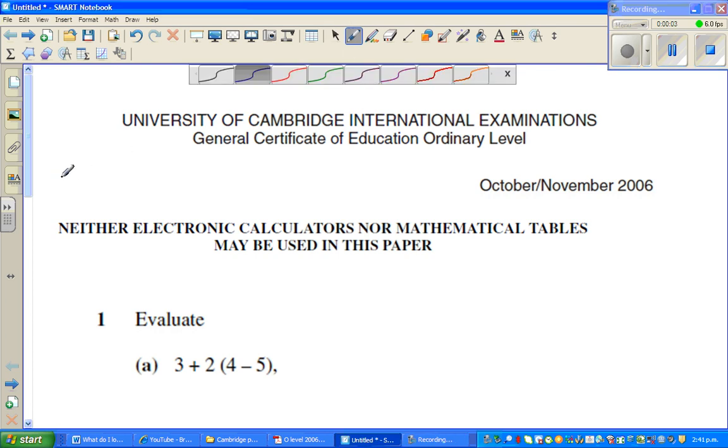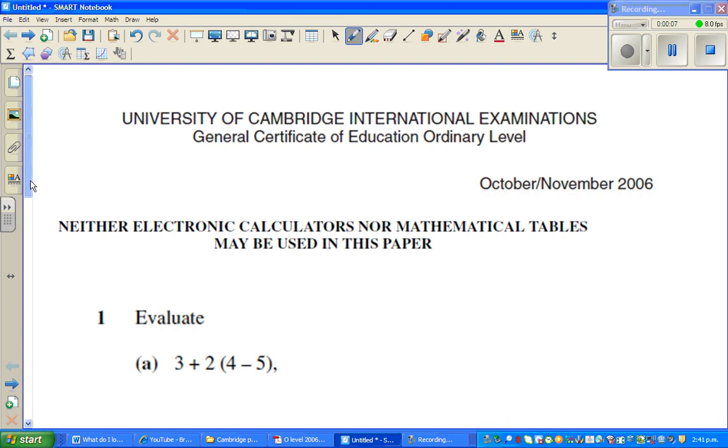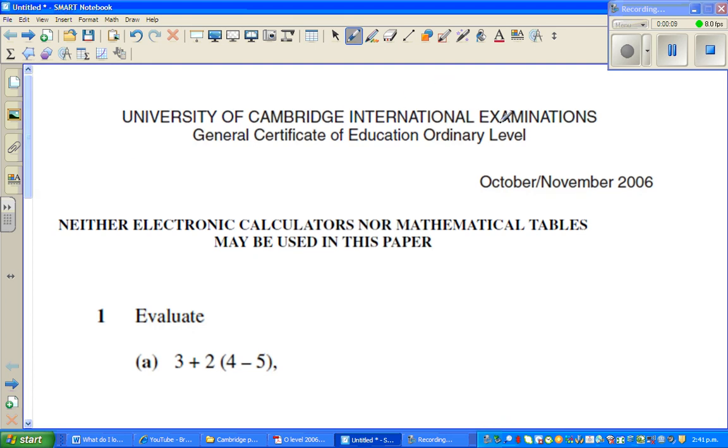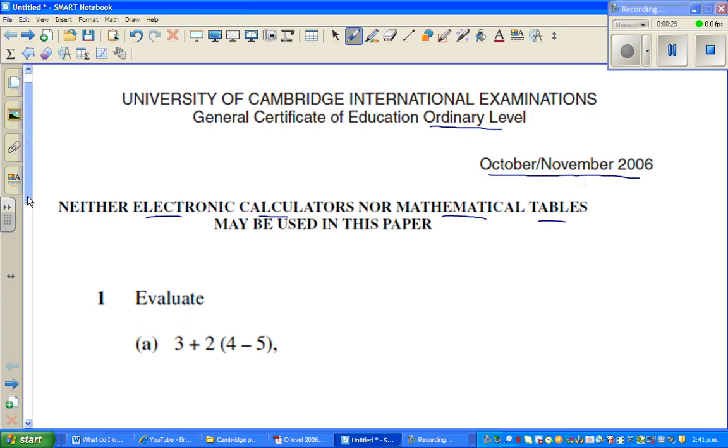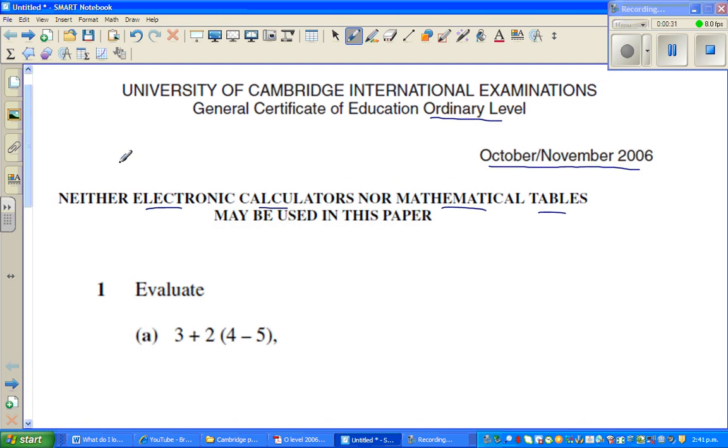Welcome back. In this video, I'm going to start a series of videos on Cambridge International Exams of O-Level. These questions have been taken from October November 2006 paper. The interesting thing is, we are not allowed electronic calculator. No mathematical tables may be used in this paper. So we have to use a pen and pencil, a pen and paper.